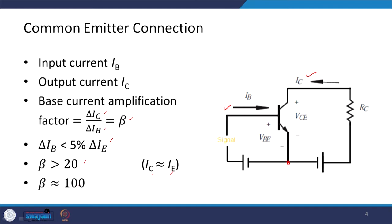The change in IB is almost less than 5 percent of the change in emitter current. Substituting, since IC is almost equal to IE, we get the beta value to be more than 20. In practical transistors, beta is around 100. This is the common emitter configuration where the emitter terminal is common with both base and collector, with signal and power supply connections on both base and collector sides.